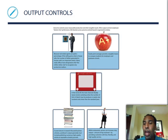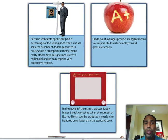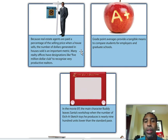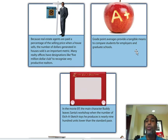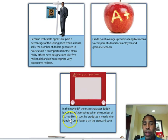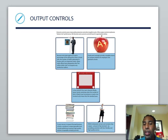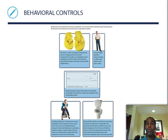Output controls examples: real estate agents are paid a percentage of the selling price when a house sells; the number of dollars generated and houses sold is an important metric, and many realty offices have designations like a five-million-dollar club. Grade point averages provide a tangible means to compare students for employers and graduate schools. In the movie Elf, buddy leaves Santa's workshop when the number of Etch-a-Sketch toys he produced is nearly 900 units lower than the standard pace.